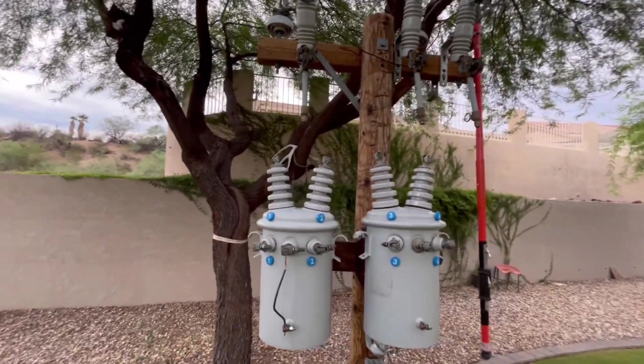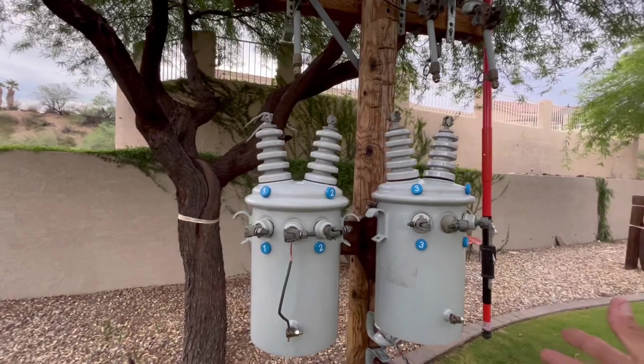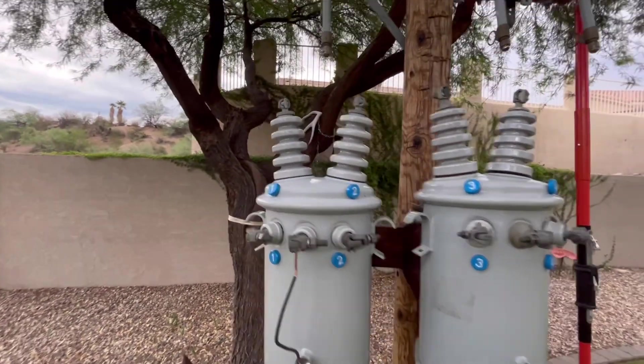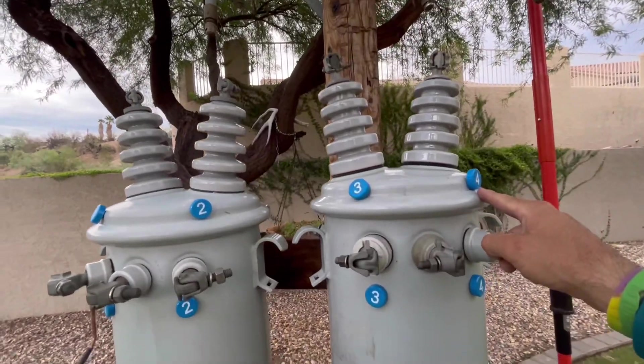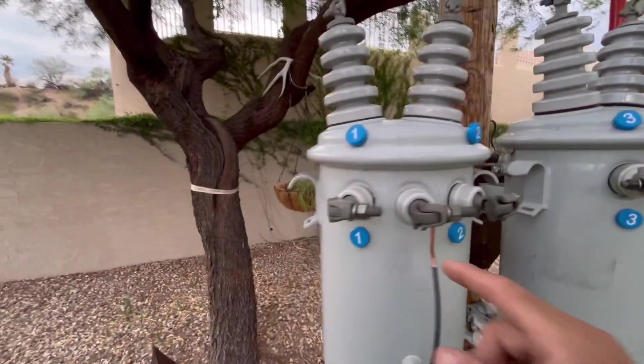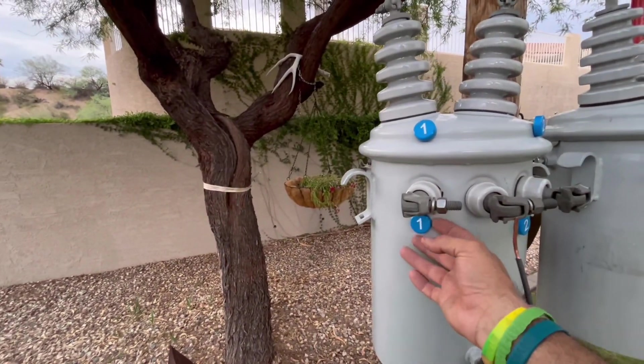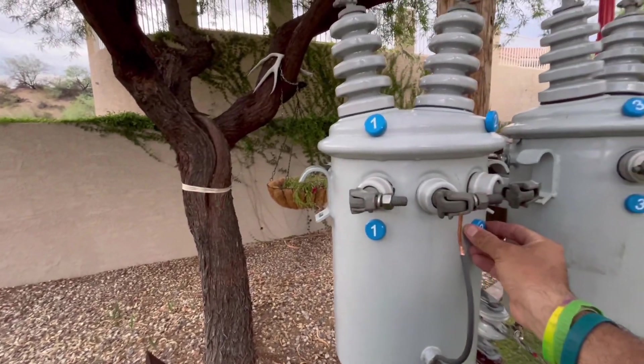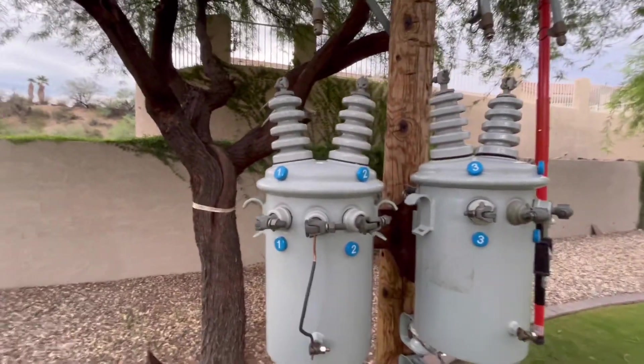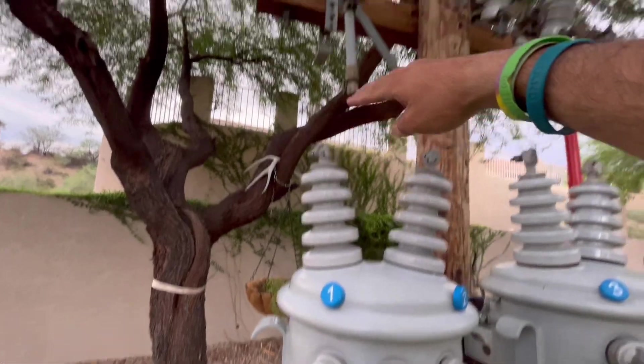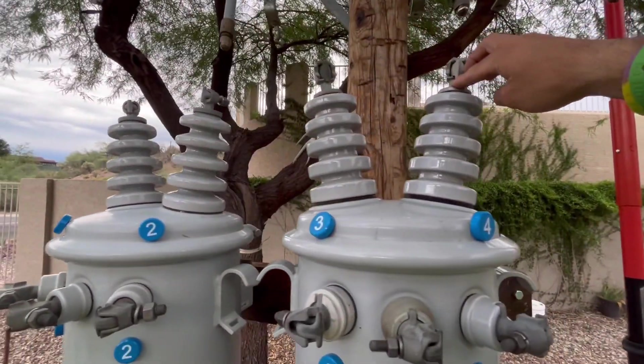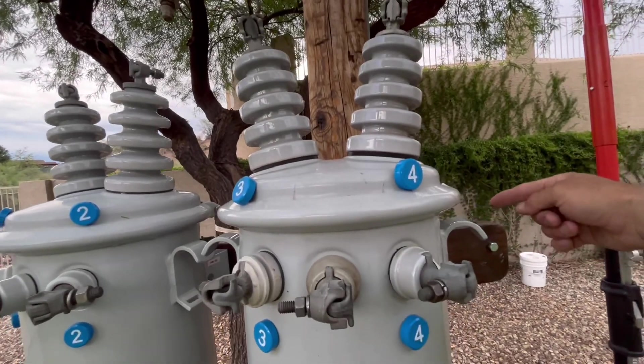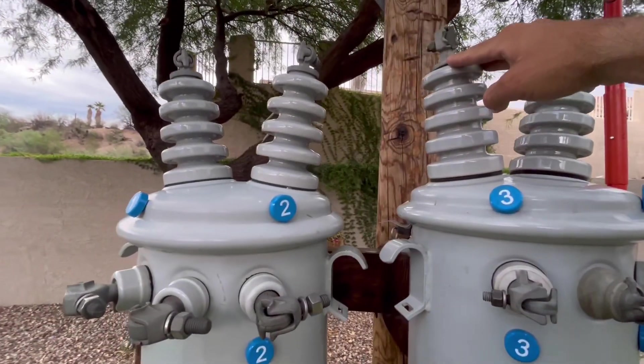All right, guys, so here we are. We've got our open bank up here, our two-pot bank going on. We've got our bushings all labeled one, two, three, four, all the way across, primary and secondary. And if you guys remember, we had one going to A phase, we had two and four tied together going to circuit neutral, and three going to B phase.